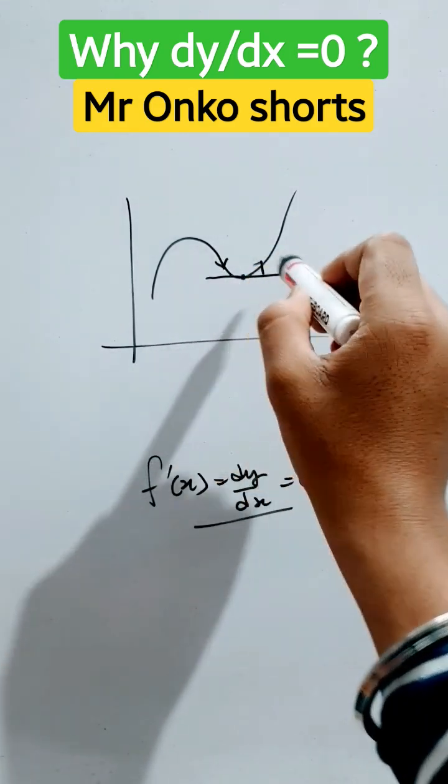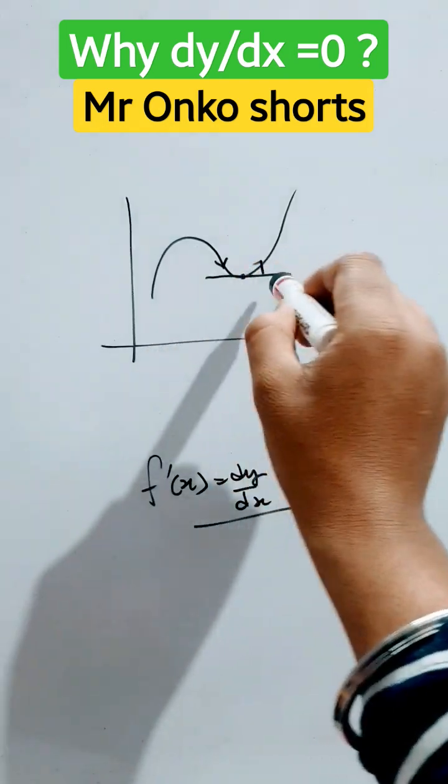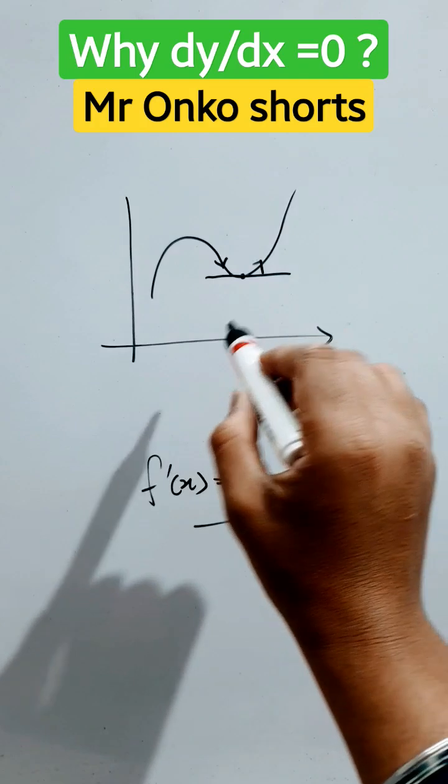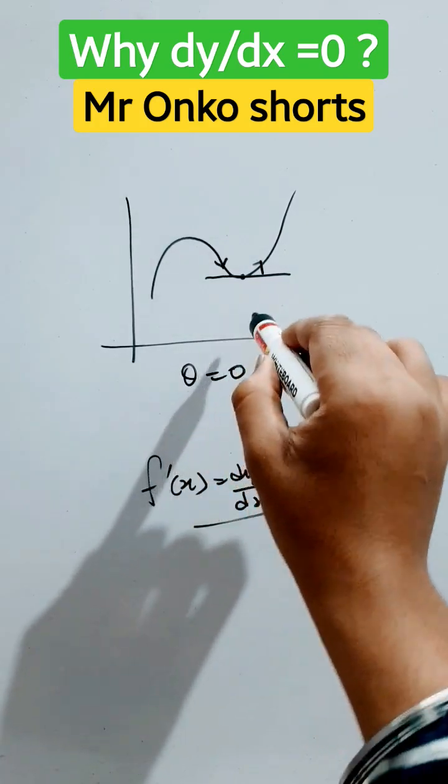So here we will draw a tangent at this point. This tangent has not intersected the x-axis since it's parallel to this. So we will take theta equals to 0, it has not intersected.